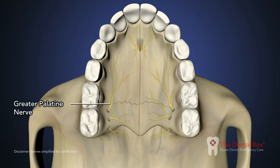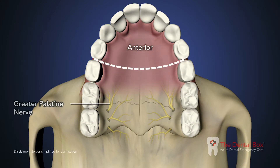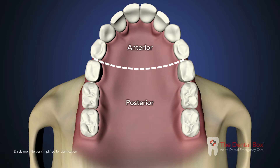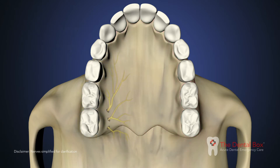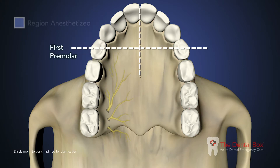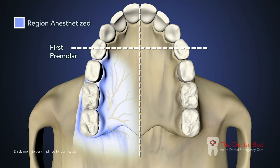The greater palatine nerve block provides anesthesia to the posterior portion of the hard palate and its overlying soft tissues, anteriorly as far as the first premolar and medially to the midline.